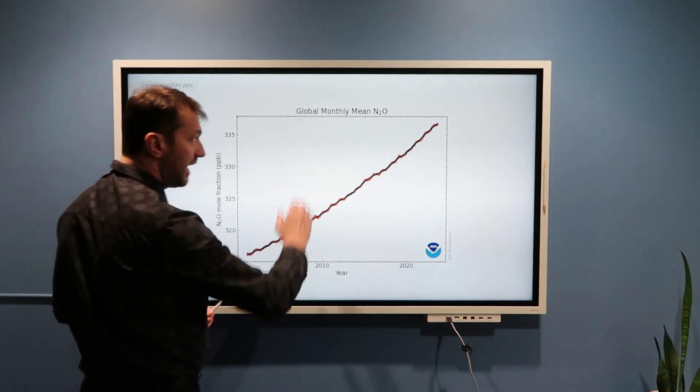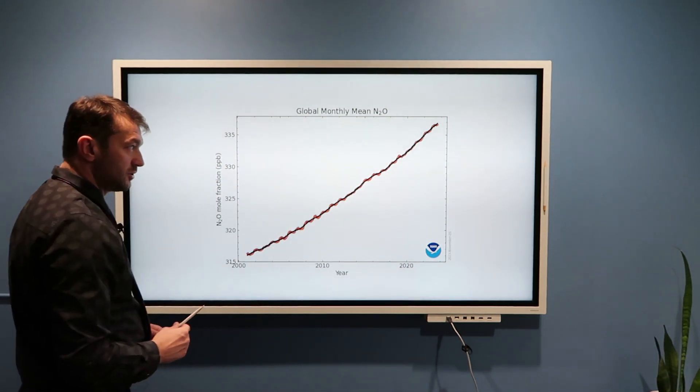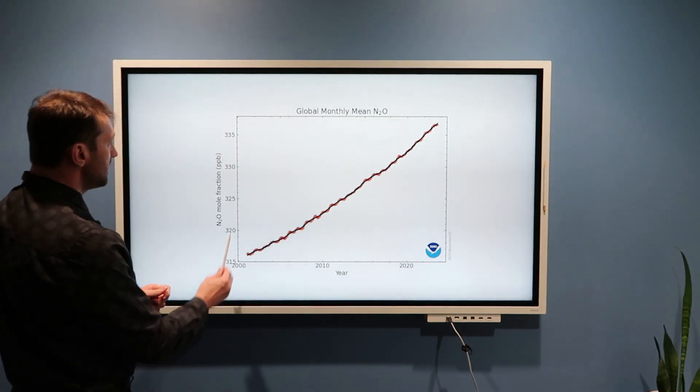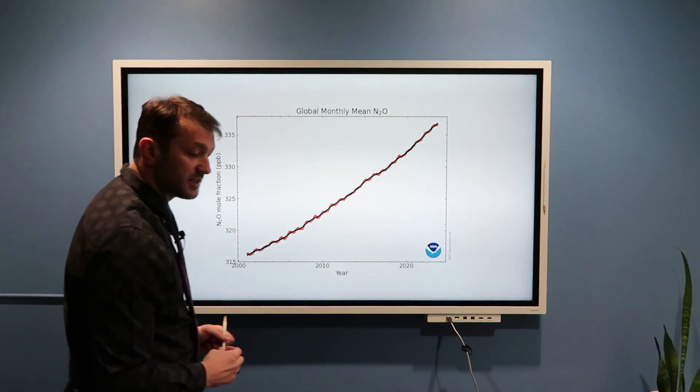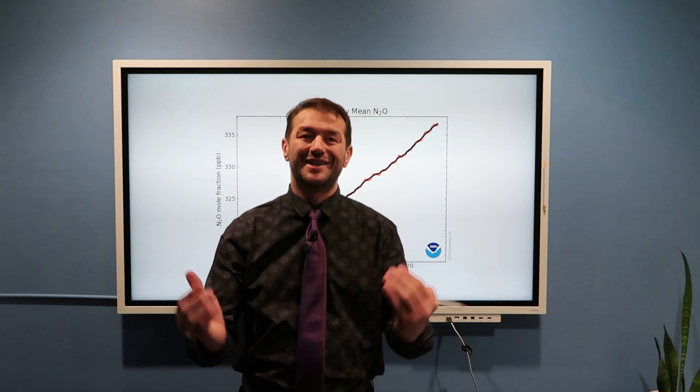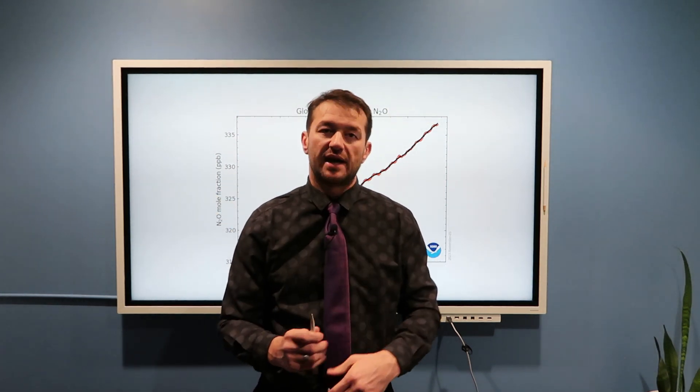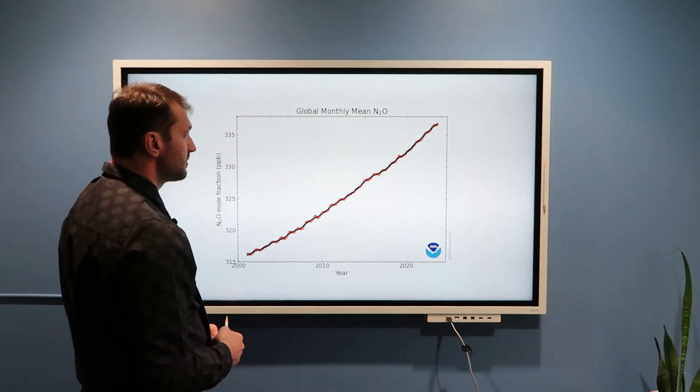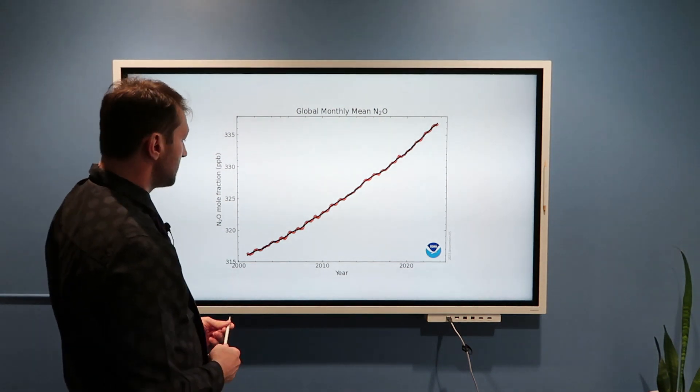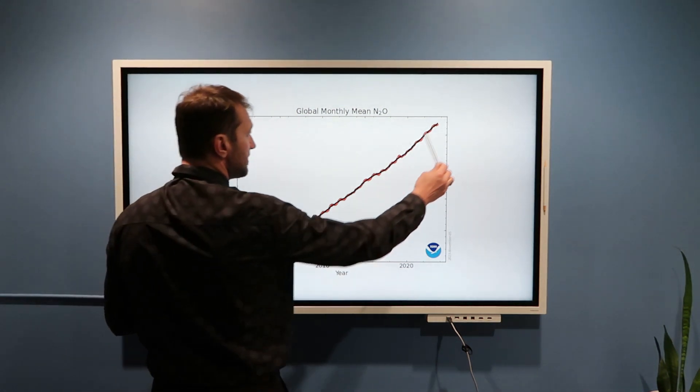If we now go to the laughing gas, N2O, nitrous oxide, we will see that these numbers are even smaller, and units are PPB, parts per billion, which means there is even less nitrous oxide than methane, which in turn is smaller in concentration than CO2. But nevertheless, we see very steady trend of increasing.